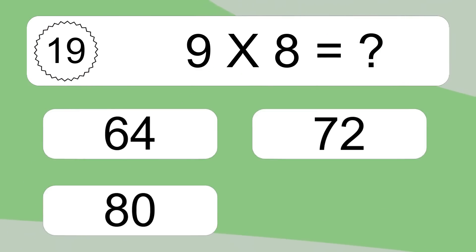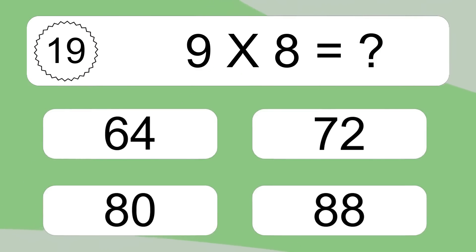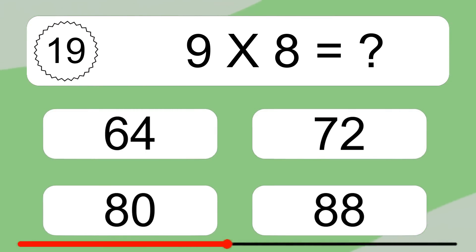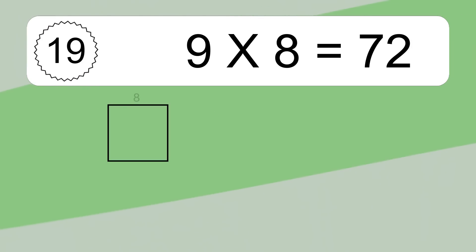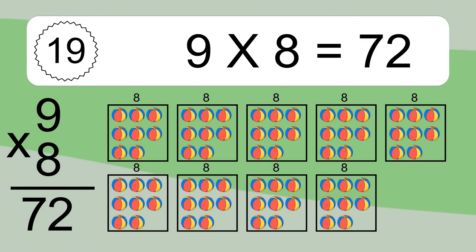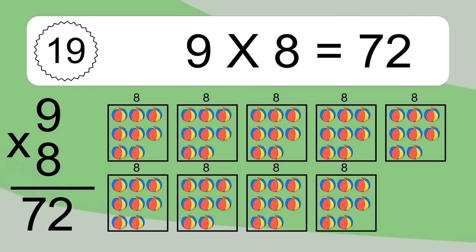9 times 8 equals what? 9 times 8 equals 72. We have 9 boxes and each box has 8 colorful balls inside. If you count all the balls in all the boxes together, you will have 9 times 8 balls. This equals 72 balls.